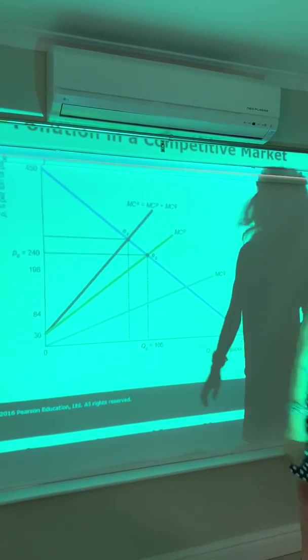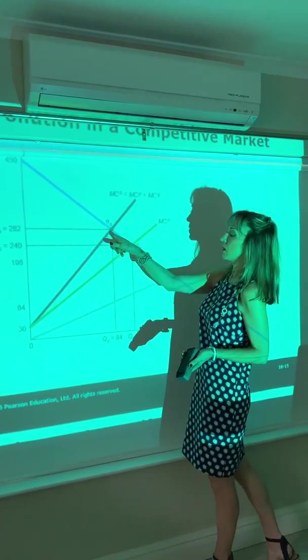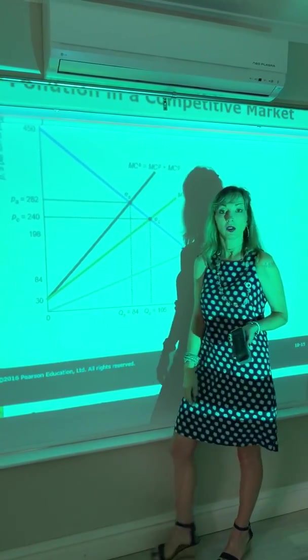And where that social marginal cost intersects your demand curve, we get the social optimum output of 84 and a higher price of 282.